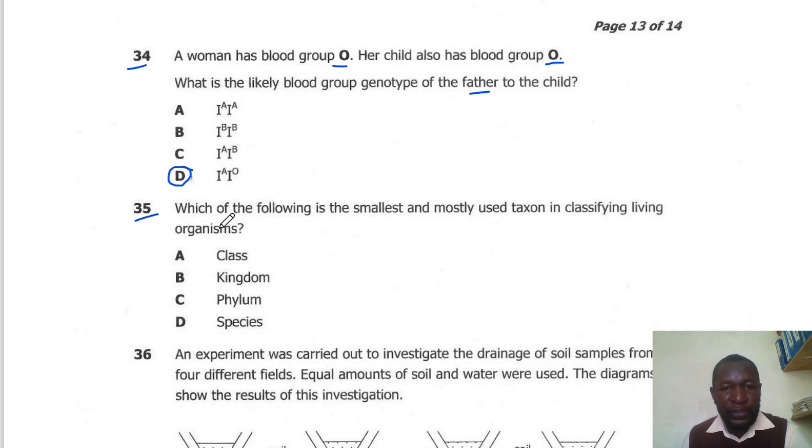Question 35. Which of the following is the smallest and mostly used taxon in classification of organisms? The smallest taxon is the species. So the correct answer is D.